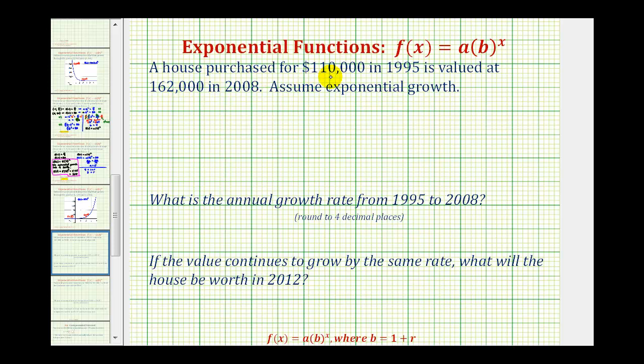A house purchased for $110,000 in 1995 is valued at $162,000 in 2008. We want to assume exponential growth and then find the annual growth rate from 1995 to 2008. And then if the value continues to grow by the same rate, what will the house be worth in the year 2012?